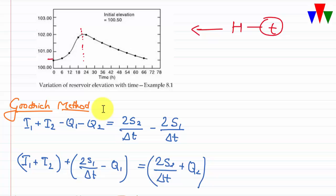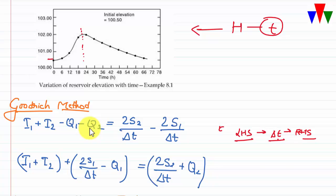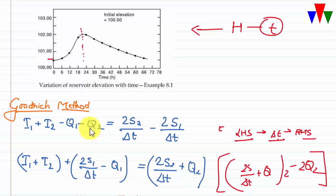Another method of storage routing is the Goodrich method. It is just another way of rearranging the earlier continuity equation such that all terms on the left-hand side are known and the right-hand side is unknown for a given time increment Δt. Here (2S/Δt + Q2) is determined from storage-elevation and discharge-elevation relationships. For the next time increment, the initial value is (2S/Δt + Q2) minus 2Q2, giving the starting point for the next step.